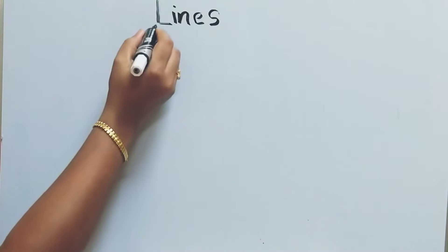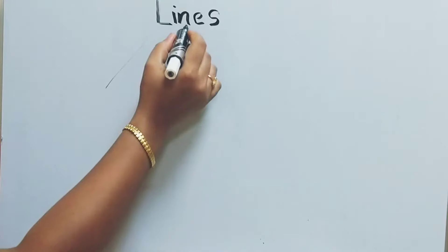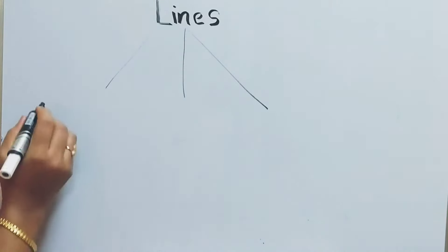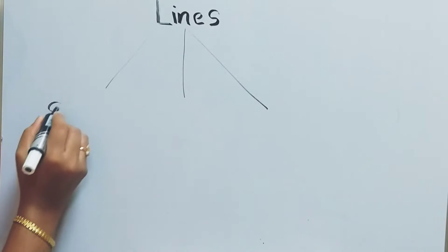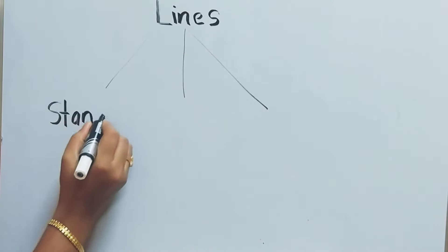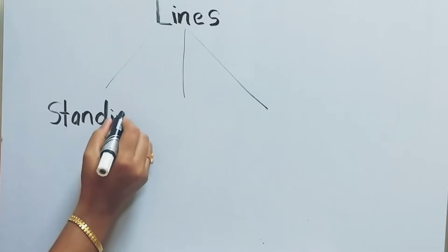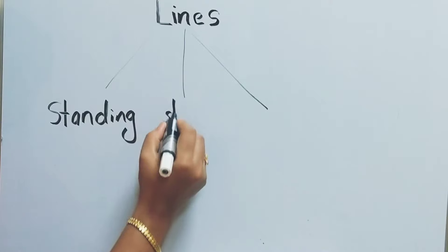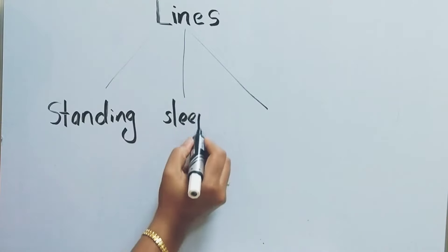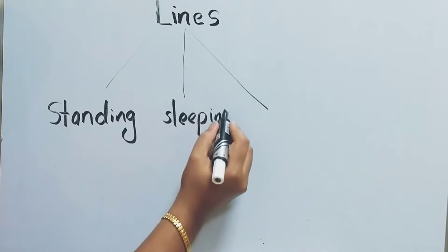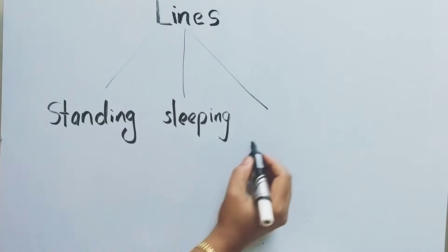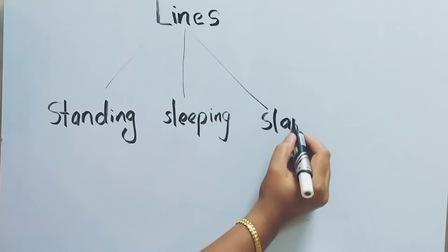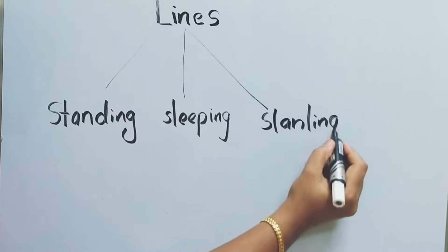There are three types of lines mainly. The first one is standing lines. Then the next one is sleeping lines. And the third one is slanting lines.